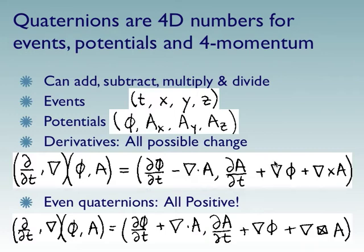Potentials also come as a scalar and three potentials that have directions. We can also take derivatives of four potentials, and this represents all possible change. So the four-derivative of a four-potential ends up with lots of terms. We've got the time derivative of the scalar and the time derivative of the three-vector A. We also have div, grad, and curl.